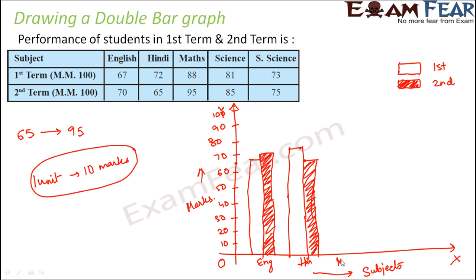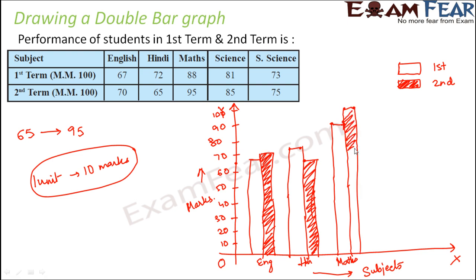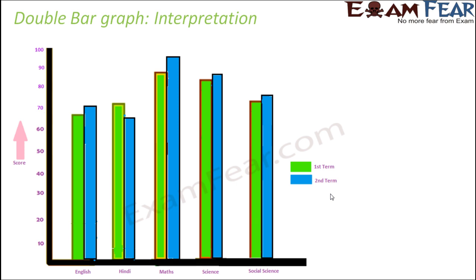Similarly, for maths: in the first term the score was 88, which is very close to 90, and in the second term it was even higher at 95. The second term bar is shaded. You follow the same pattern for science and social science, and that is how you complete the double bar graph.